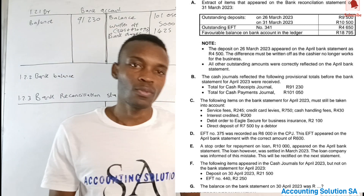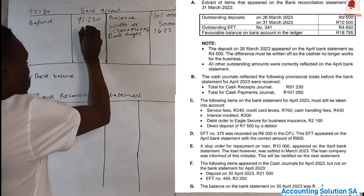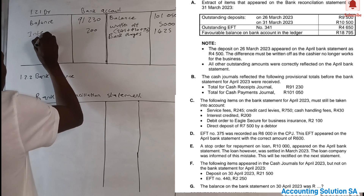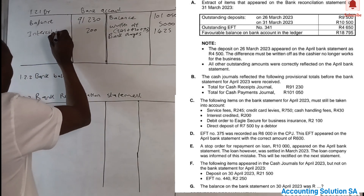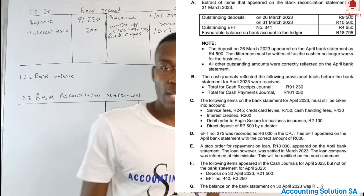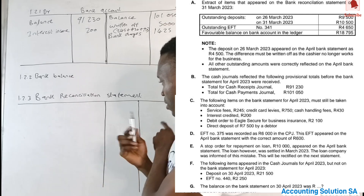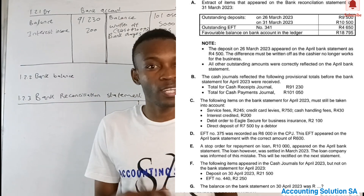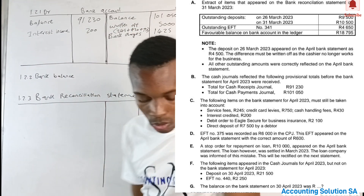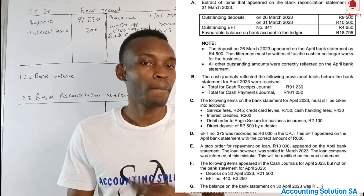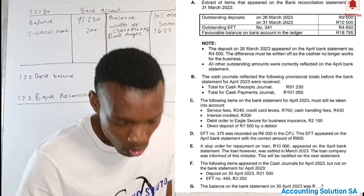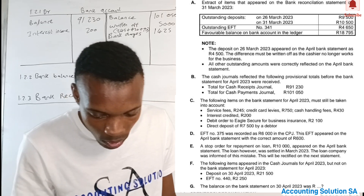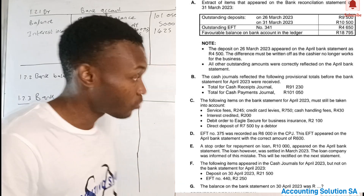Interest credited is an amount that we earn, so interest of 200 is cash we receive — it's interest income. This amount has been credited on the bank statement, which means when we go to our books it must be debited. Don't be confused by the word 'credit' and think it goes on the payment side — they are referring to the bank statement. A debit order is always on the payment side: a debit order to Angle Secure for business insurance is 2,100, meaning we paid insurance of 2,100.